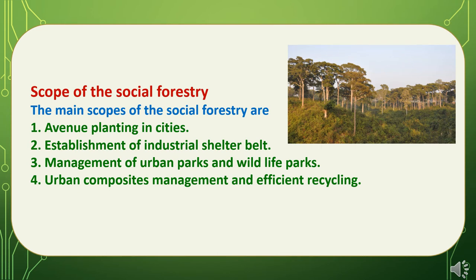What are the scopes of Social Forestry? The main scopes include avenue planting in cities for urban development — planting for pollution control, environmental suitability, and parks development, which are necessities of society. Second, establishment of industrial shelter belts where forestry plantation is done in industrial areas. Third, management of urban parks and wildlife parks, which are important sources for environmental protection and supplying basic needs of rural people. Fourth, urban composites management and efficient recycling.